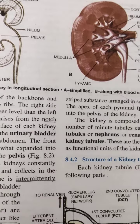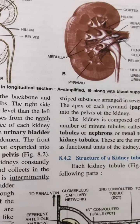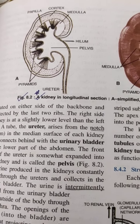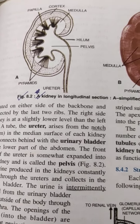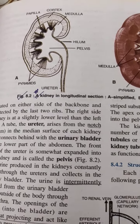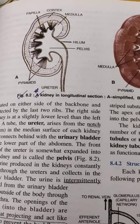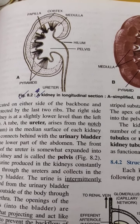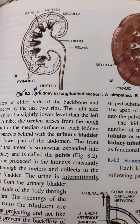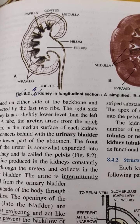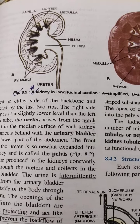Now we go through the internal structure of the kidney. From the black-and-white diagram, the cortex and medulla are clearly shown — the cortex is the dotted outer portion and the medulla is the non-dotted, whitish inner portion. So the cortex is the outer part and the medulla is the inner part — these two are the main components of the kidney's internal structure.